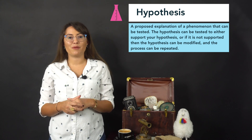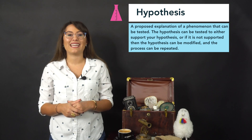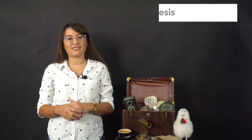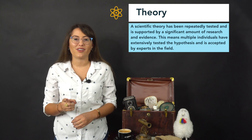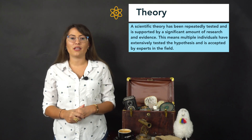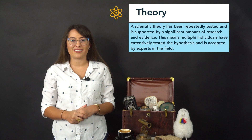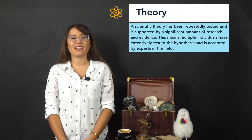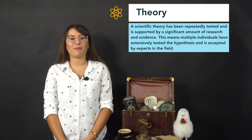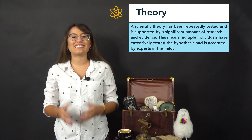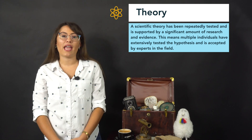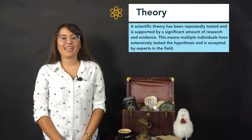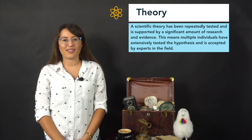When a hypothesis has been repeatedly supported by experiments it can in time be accepted as a theory. There is a lot of confusion that surrounds a scientific theory — it's not to be confused with a hypothesis. A scientific theory has been repeatedly tested and is supported by a significant amount of research and evidence. This means multiple individuals have extensively tested the hypothesis, and it has been accepted by many experts in the field and thus accepted as a theory.